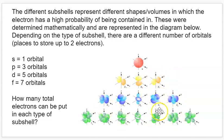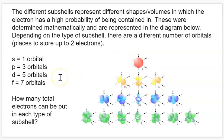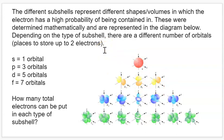For S orbitals, there's only one type of S subshell, so whenever we're dealing with S orbitals there's only ever going to be one of them. If we're at an energy level that has P subshells, there are going to be three of them. If we have D subshells, there will be five. If we have F subshells, there will be seven. And each orbital — each of these little shapes — can hold two total electrons. So the subshells can hold a total number of electrons equal to the number of orbitals times two.